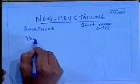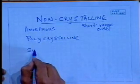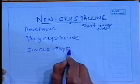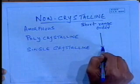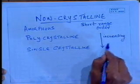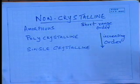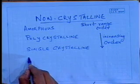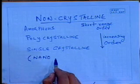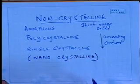And then we have polycrystalline materials, and then single crystalline materials. In this classification there is increasing order — going from amorphous to polycrystalline to single crystalline materials. And then we have a subcategory that is very important today: nanocrystalline materials. Almost no lecture is complete without the word nano these days, so we should be aware of that word and its implications for the future.